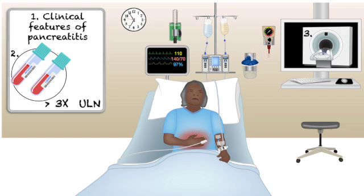To definitively diagnose acute pancreatitis, you need at least two out of three specific findings: one, the characteristic clinical presentation — severe epigastric pain radiating to the back with vomiting; two, biochemical evidence — elevated serum amylase and lipase more than three times the upper limit of normal (mild elevations of one or two times are not sufficient); and three, imaging evidence of pancreatic inflammation on contrast-enhanced CT scan. Two out of three.